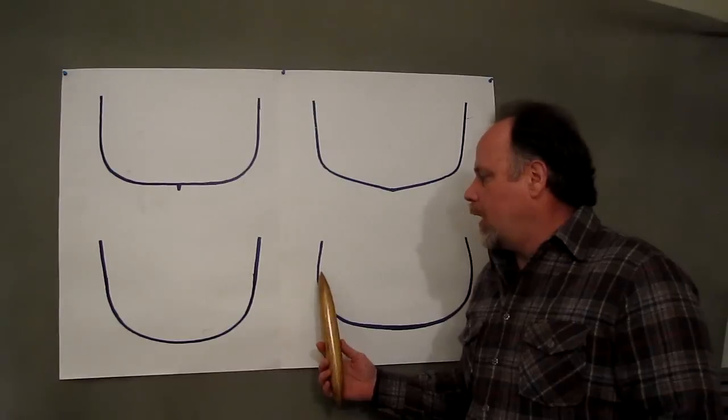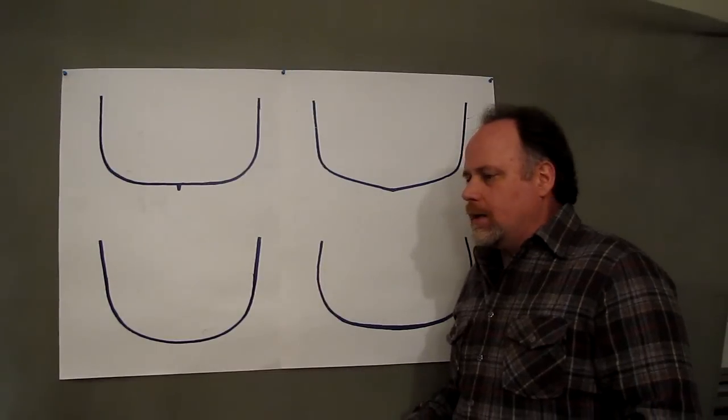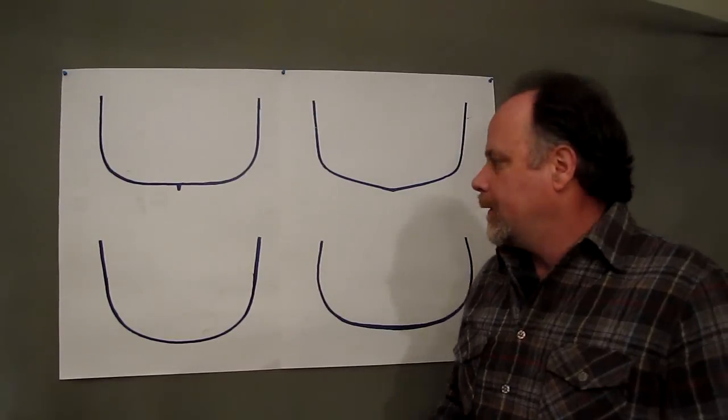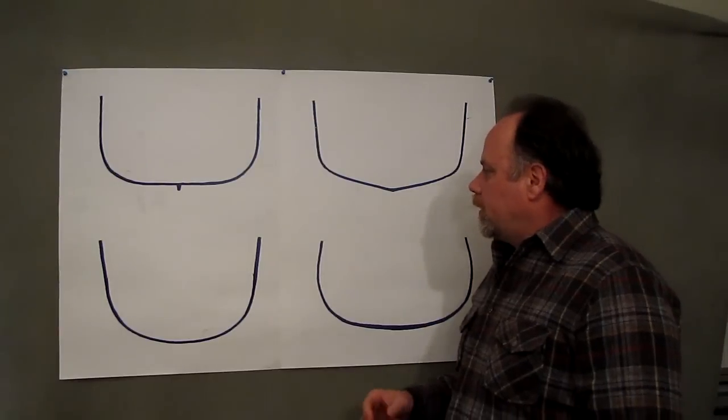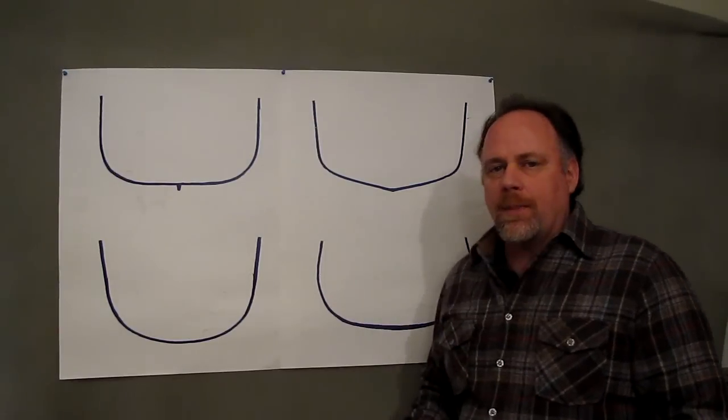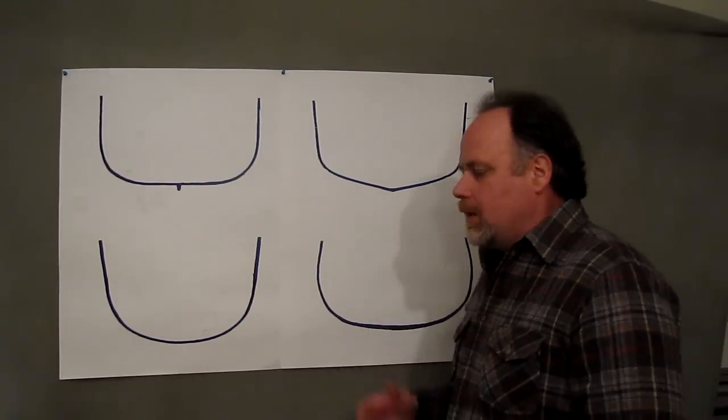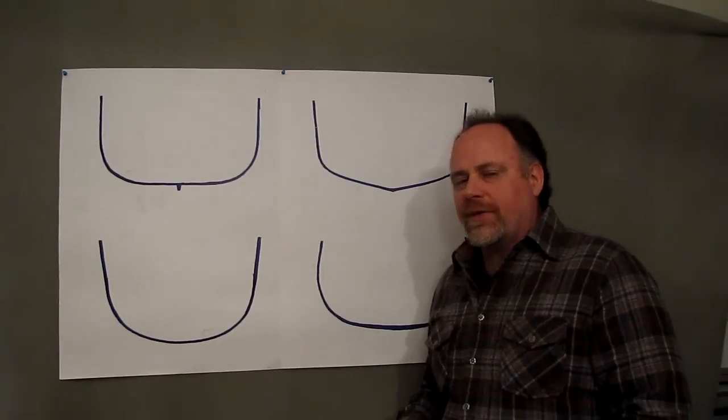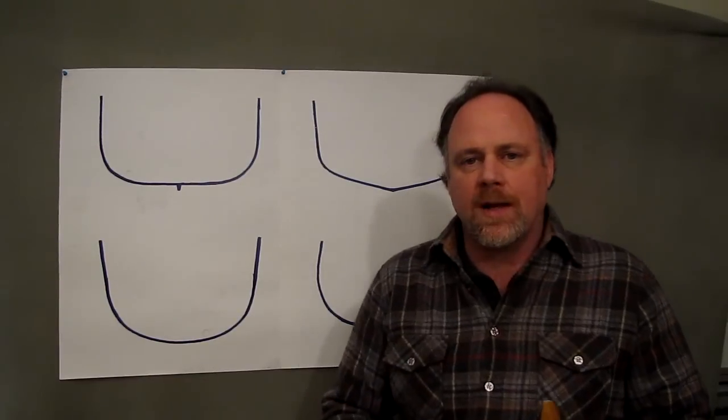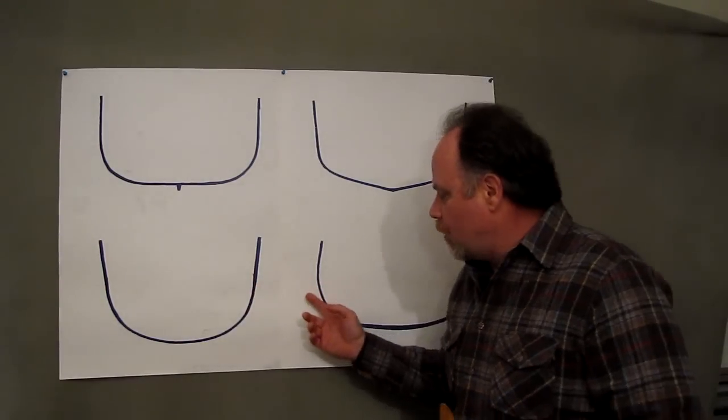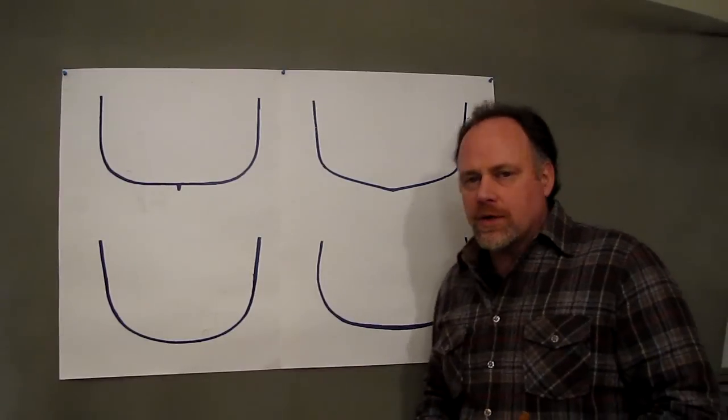With how wide a canoe is, again, it will add to its initial stability. It will add to its carrying capacity. It will also add weight. Plus, it will make it more difficult to push through the water because it's going to have more wetted surface, more water touching the boat. Therefore, more friction.